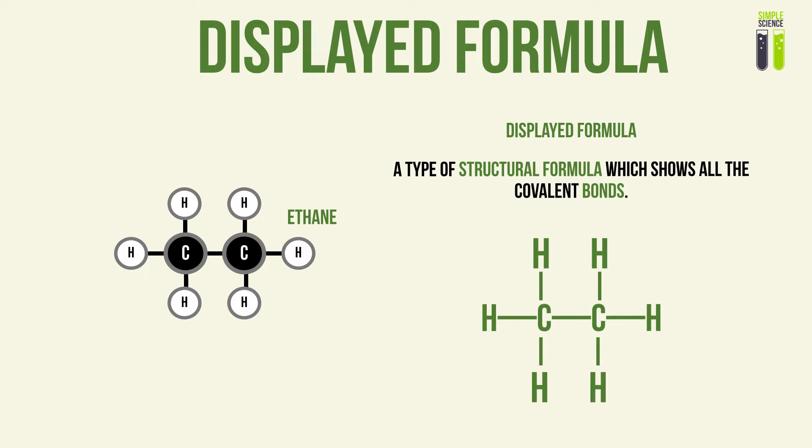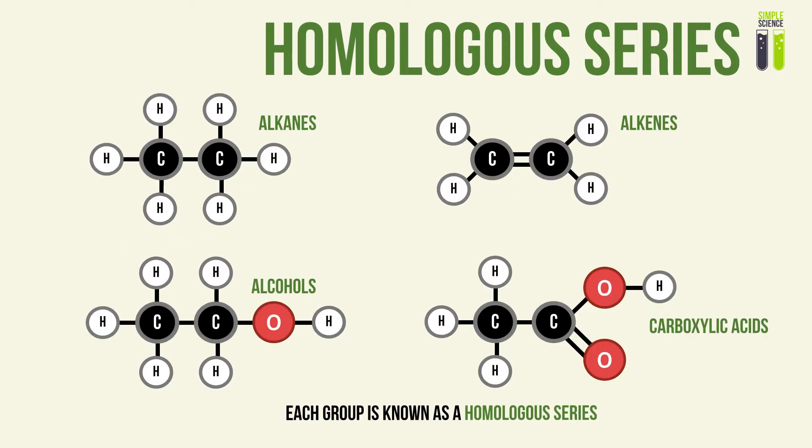The displayed formula is essentially the structural formula but shows all covalent bonds and the arrangements of bonds surrounding each carbon atom. Those are the three main formulae used to describe any organic compound. Now let's look at the concept of the homologous series.